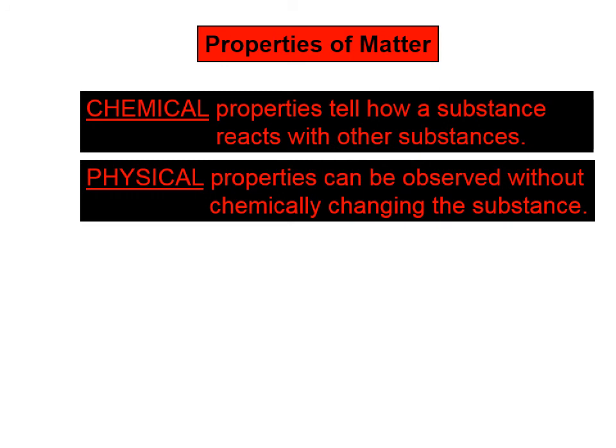Chemical properties tell how a substance reacts with other substances. Physical properties can be observed without chemically changing the substance. In order to observe a chemical property of a substance, that substance has to react with something else, after which it's not the same substance we were talking about at the beginning.